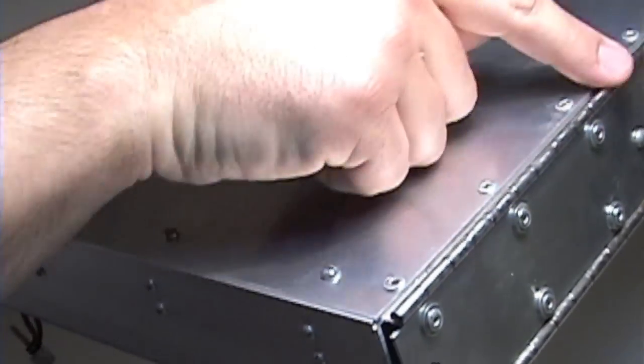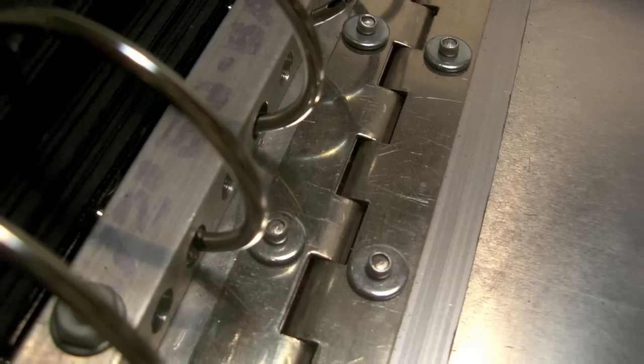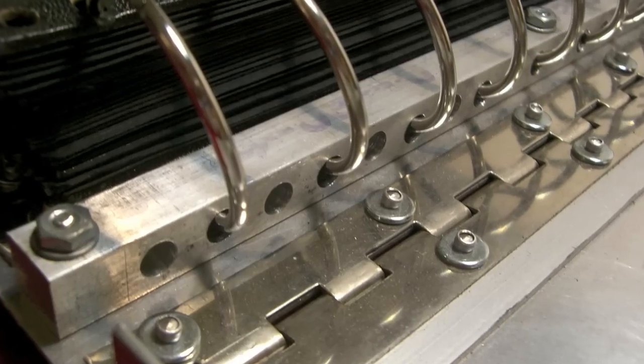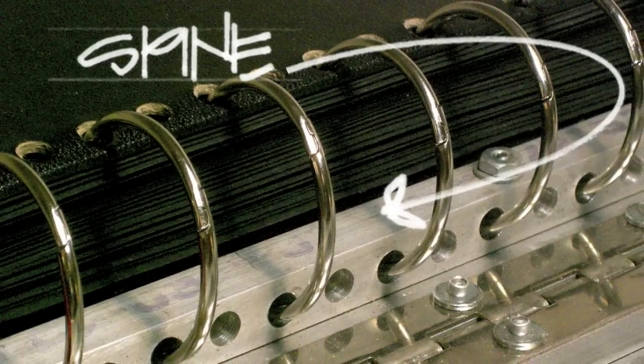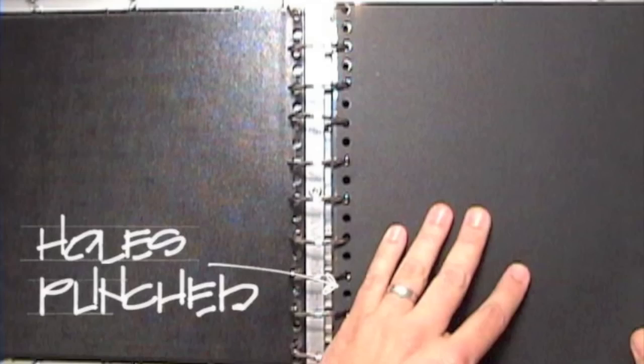The binding is custom made with individual metal rings that pass through a custom aluminum spine. The pages are thick black paper with holes punched at the edge.